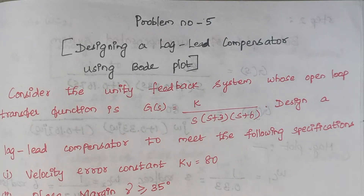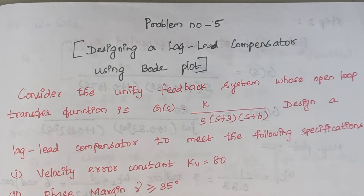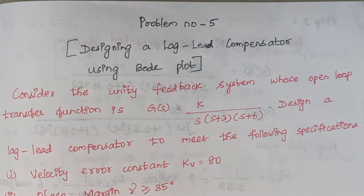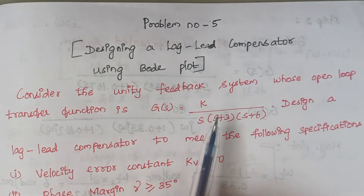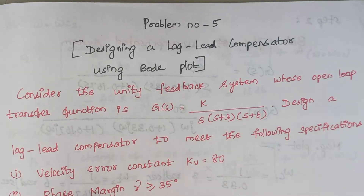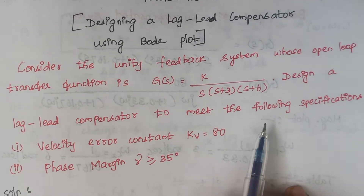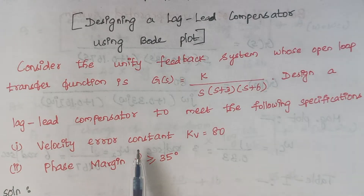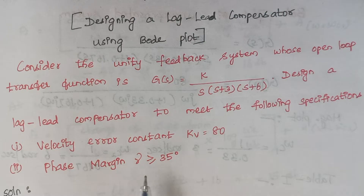Hello viewers, I am Kausalya. Today we are going to solve problem number 5 under the topic of designing a lag-lead compensator using Bode plot. The problem is: consider the unity feedback system whose open loop transfer function is given — design a lag-lead compensator to meet the following specifications. First, velocity error constant kV is equal to 80 and phase margin is greater than or equal to 35 degrees.